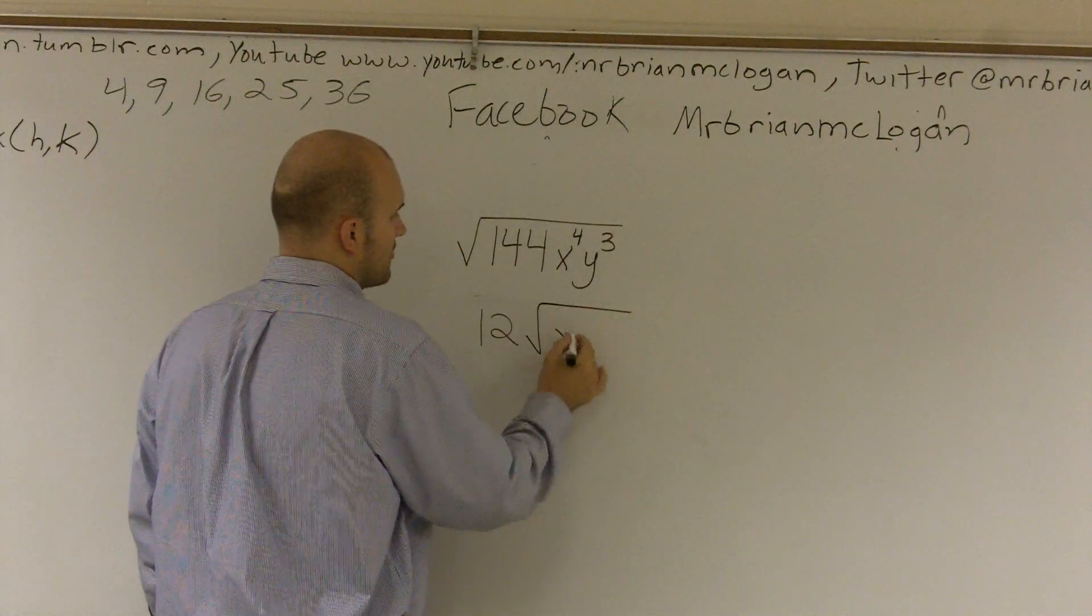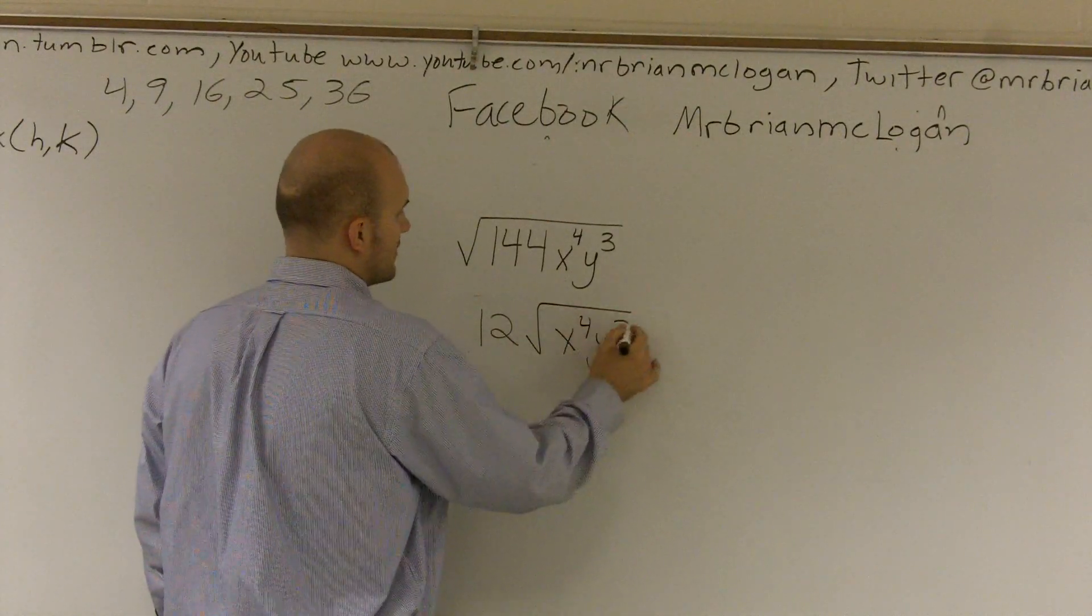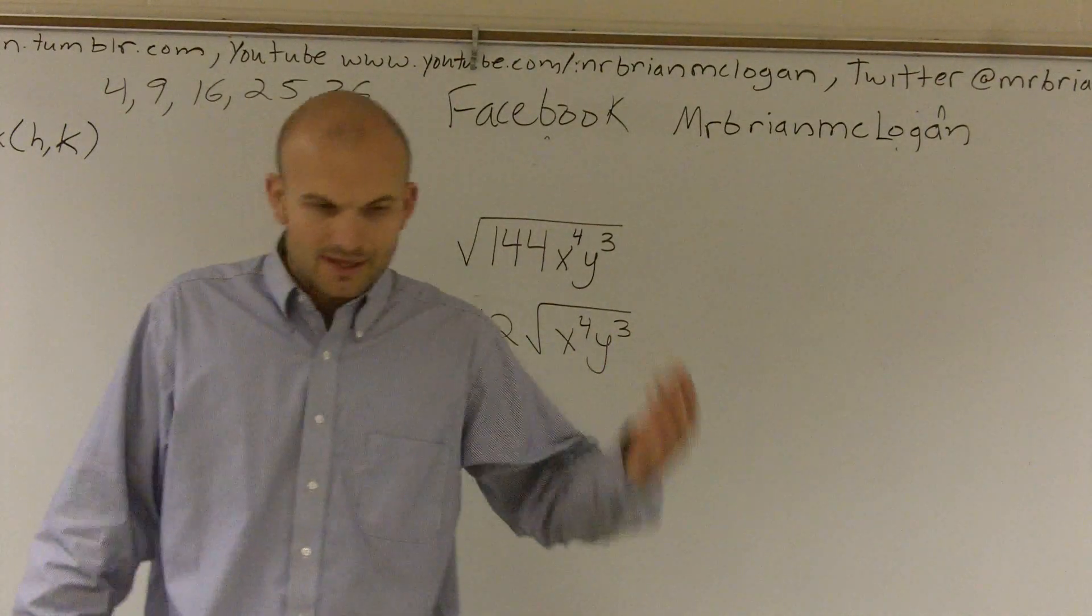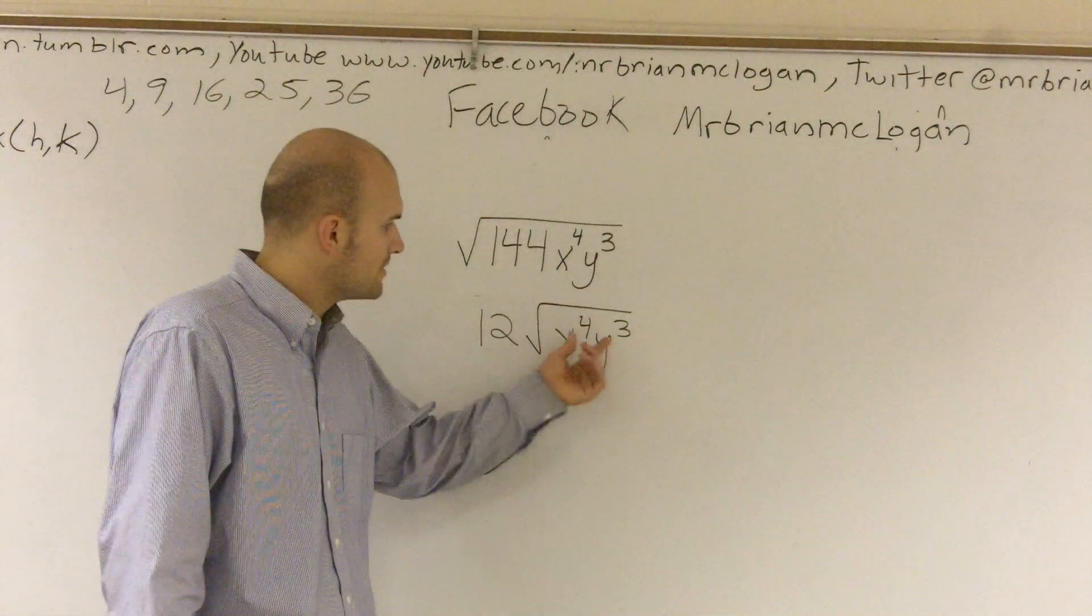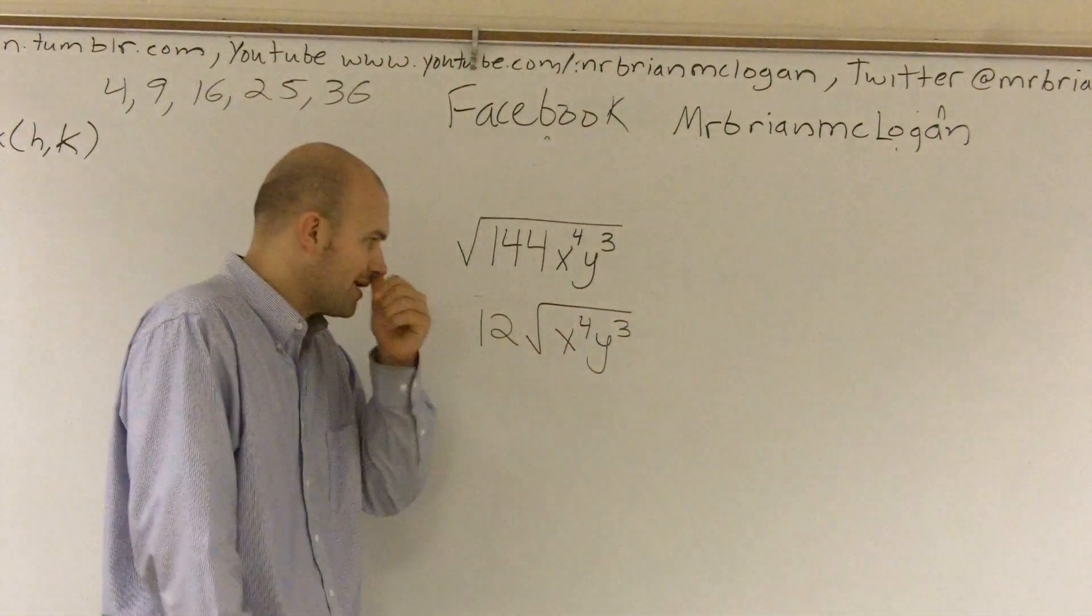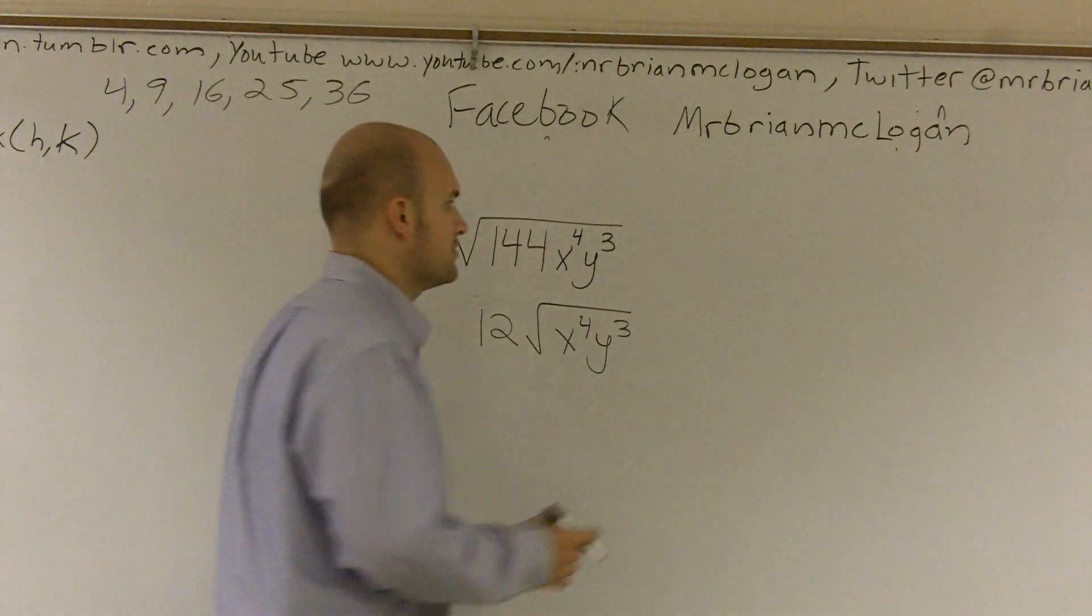Now, here comes my hard part. I have x to the fourth and y cubed. So how am I going to simplify this to get some values, get these radicals out? How do you take the square root of x to the fourth and the square root of y cubed? Well, a couple things I want you to remember.